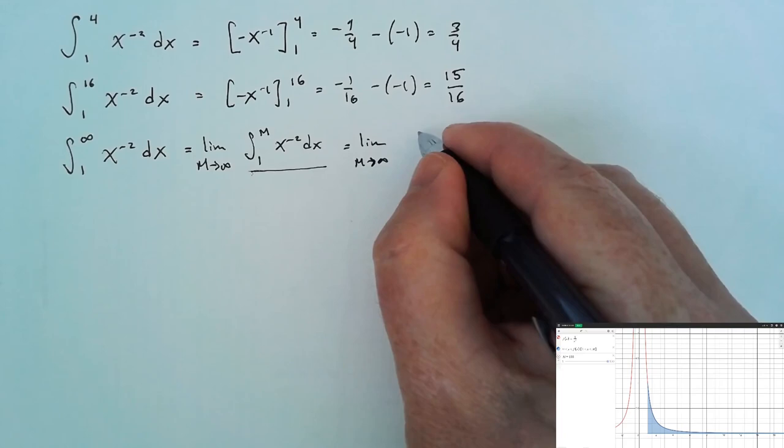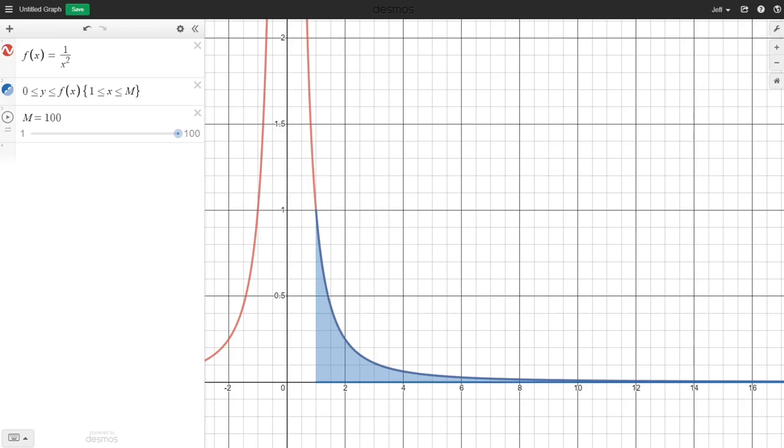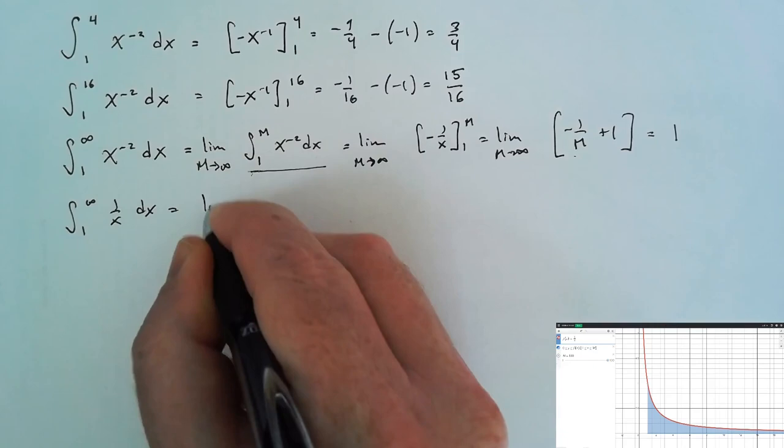It may seem strange that the area of a region of infinite length is actually finite. What if we had a different function? What if instead of 1 over x squared, we looked at the function 1 over x? This area appears somewhat bigger than before. Let's see if it is finite. We must first rewrite this improper integral as a proper integral. We'll again use m as some massive number.